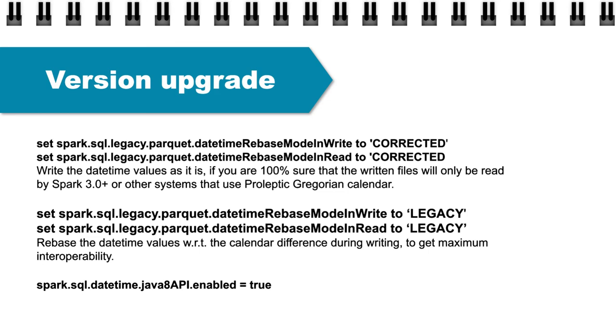There is a third property that also needs to be set: Spark SQL datetime Java 8 API enabled. Because in Spark 3 we are using the Java 8 API, and the way we are capturing date and time is different. This property needs to be enabled even if you are using PySpark, Scala, or Java, because internally this API is called by Spark. To summarize: whenever there is a version upgrade, these properties need to be set to ensure that the upgrade is seamless and properly handles the date and timestamp data types. Today we learned what the data types date and timestamp are, how they are stored internally by Spark, how Spark reads and writes them, what calendars are used, the difference between both versions, and how to handle the version upgrade. Please like, subscribe, and comment on the video. Thank you.